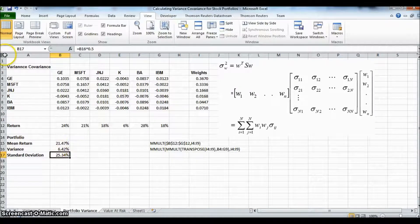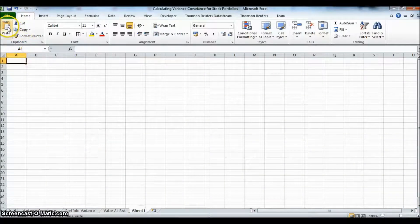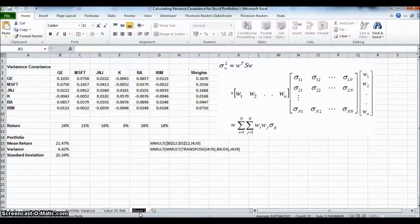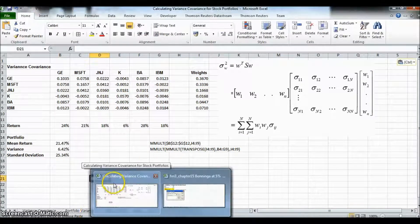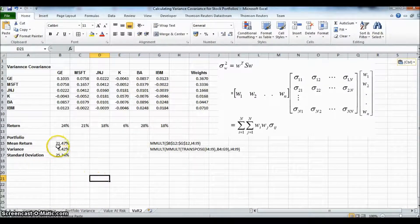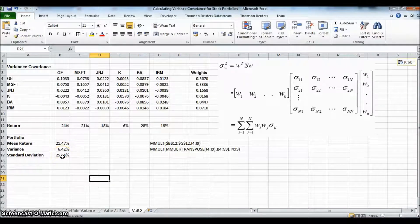If we take this data again, copy and paste into a new spreadsheet, and we'll call it value at risk 2, V-A-R-2. And so we have mean return for the portfolio, variance, standard deviation for a given portfolio.